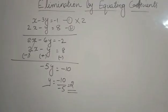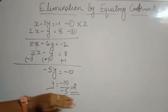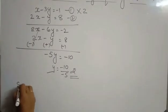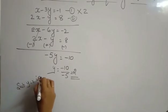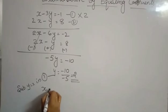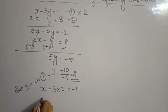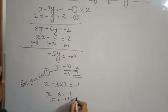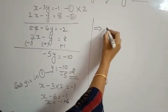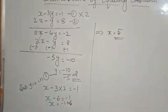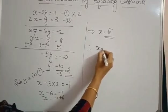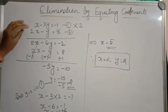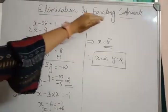We got the value of y as 2. Now the fourth step: substitute the value of y into any one of the equations to find the other variable. Let's substitute in equation number 1. Substituting y equals 2, we get x minus 3 times 2 equals minus 1, so x minus 6 equals minus 1, giving x equals minus 1 plus 6, which implies x equals 5. Therefore, x equals 5 and y equals 2. This is how we solve simultaneous linear equations by elimination by equating the coefficients.